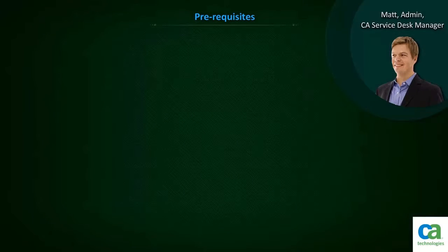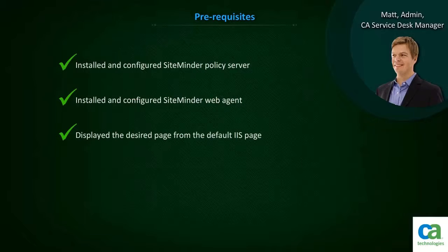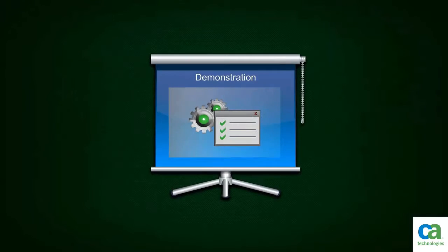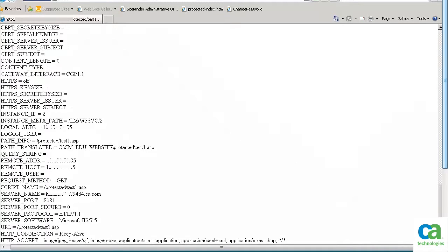Before we proceed, ensure that CA SiteMinder is installed and configured, CA SiteMinder Web Agent is installed and configured, the desired page is displayed, and the default IIS page is displayed. Let us view the variables of a protected application for which the Remote User has not been configured.